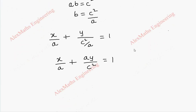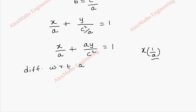Now we have only parameter a, and we are going to differentiate this with respect to a. The first term x/a is x × (1/a), and since x is a constant, differentiating 1/a gives -1/a². For the second term ay/c², everything except a is constant, so the derivative is y/c². Setting equal to zero: -x/a² + y/c² = 0.